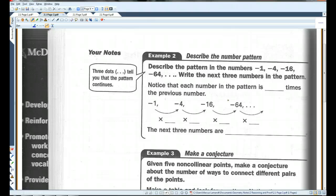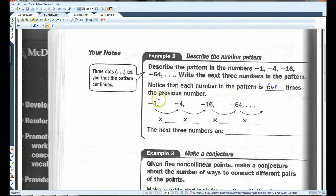Negative one, negative four, negative sixteen, negative sixty-four, et cetera. Write the next three numbers in the pattern. Notice that each number in the pattern is four times the previous number. Negative one times four is negative four. Negative four times four is negative sixteen. Negative sixteen times four is negative sixty-four. We just keep multiplying by four.